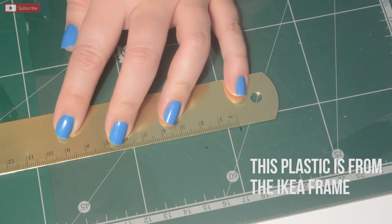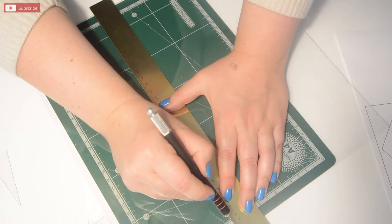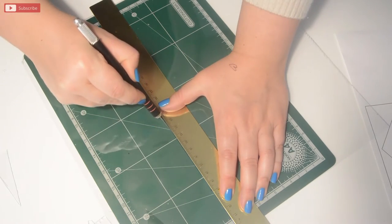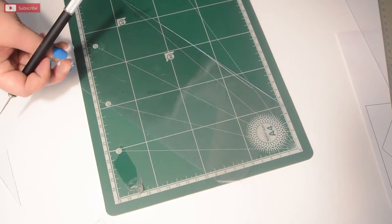So the first thing you want to do is measure 10cm in on the plastic. Once you've done that, you want to cut down that line on both sides of the plastic and then you can easily break it apart like this.